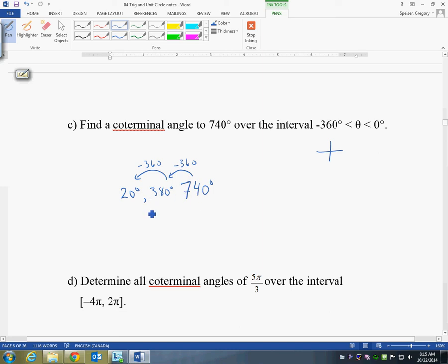These are all coterminal, but I'm still not between negative 360 and 0. So I need to subtract another 360, and then I'll be at negative 340 degrees. So there I am at negative 340 degrees. Good, it fits in between negative 360 and 0. If I subtracted another negative 360, then I would get negative 700 degrees. And that is too far negative, it's to the left of 360, so this would be my only answer. Negative 340.